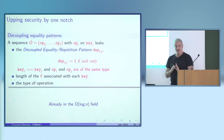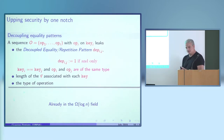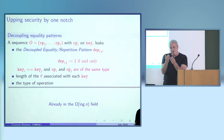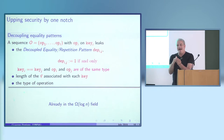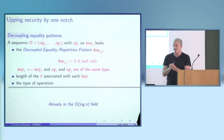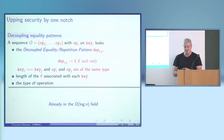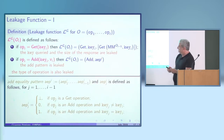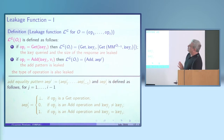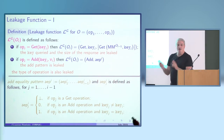We identify the transition from constant overhead to log n overhead, and it's due to the decoupling of the equality pattern.